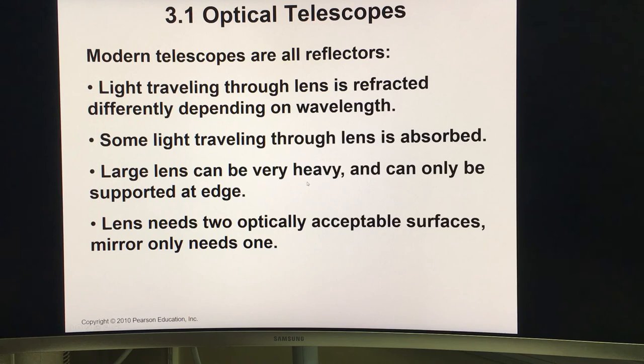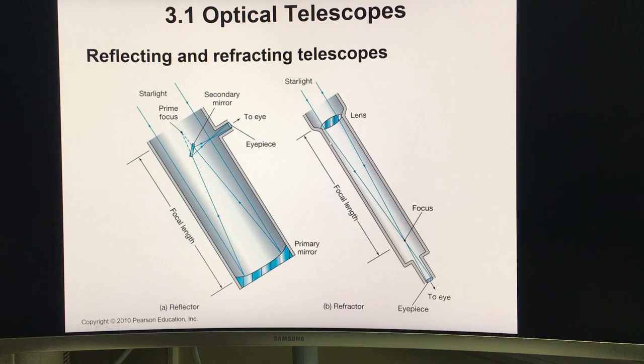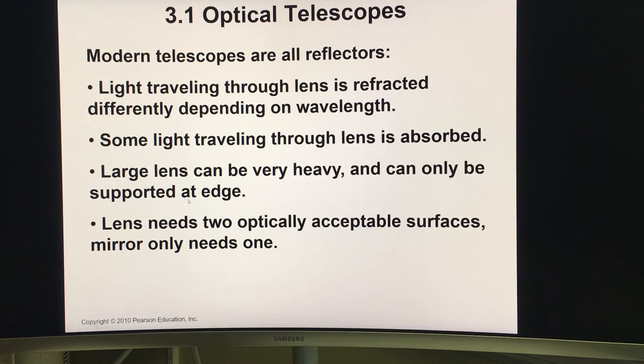Large lenses can be very heavy and can only be supported at edge. The lens needs two optical acceptable surfaces. As you can see here, we have lenses with two different surfaces, but the mirror you only need to deal with one optical surface. That's why modern telescopes are all reflecting telescopes, and the one actually QCC has on the roof of the library is also a reflecting telescope.